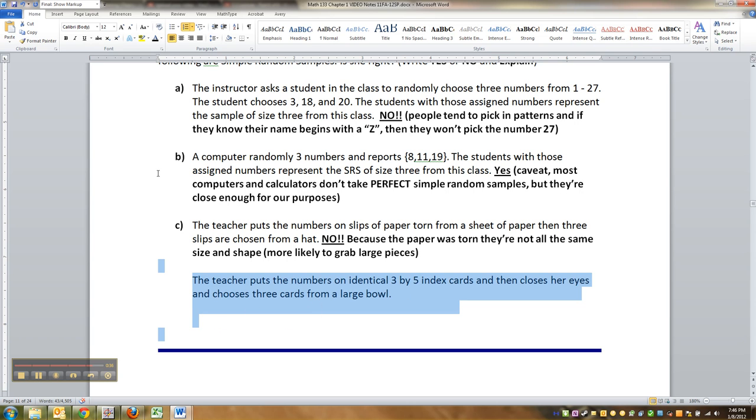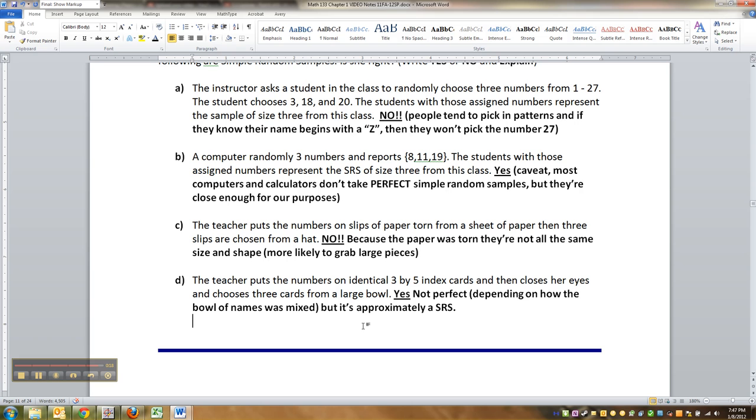What about three by five identical cards? Closes her eyes and chooses. Yes, that's for our purposes going to be close enough. It's actually not perfect because, I mean, was the bowl well mixed? Did she get a peek before she closed her eyes? That kind of thing. But for our purposes, it's close enough that it approximates a simple random sample.